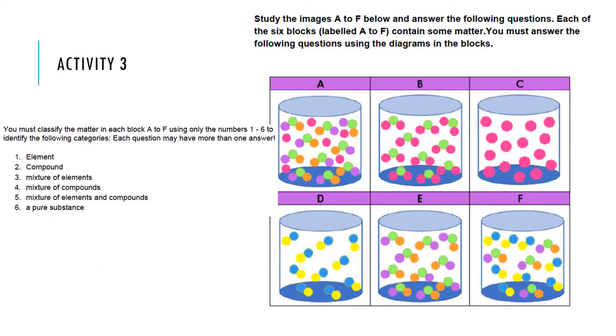In Activity Number 3, here's what you will do. Study the images A to F below and answer the following questions. Each of the six blocks labeled A to F contains some matter. These are matter. You must answer the following questions using the diagrams in the blocks A, B, C, D, E, F.